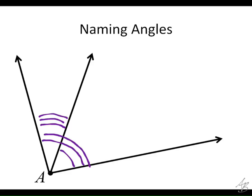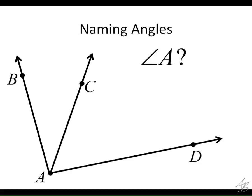This could be called angle A, this could be called angle A, or this one could be called angle A. We don't know which one we're talking about. This is what's called ambiguous — it could have more than one meaning. We don't want to use ambiguous names that could mean more than one thing. So when there's more than one angle at a vertex, we're going to use three letters, like angle B-A-C.